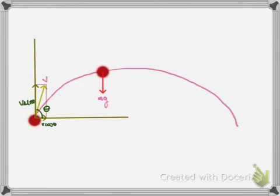Now let us consider this point of motion. At this point the force has started to act, and the force is equal to mg. But the only velocity that is acting in the direction of the force is v sin theta, the y component. So by the normal laws of motion, we can say the only component of velocity that will change is the y component, or the vertical component — that is, v sin theta will change.